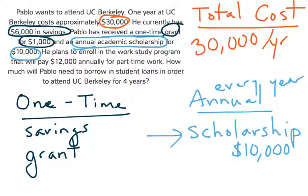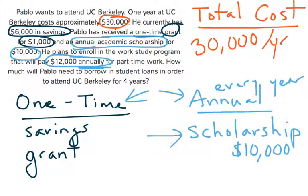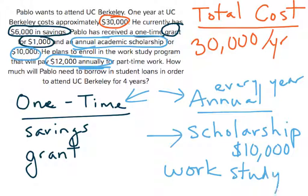He also plans to enroll in the work-study program that will pay $12,000 annually. So again, it says annually, so we put it in the annual category. If it didn't say annually, it might actually be one time — but you have to read it carefully. In this case, the work-study program is annual.